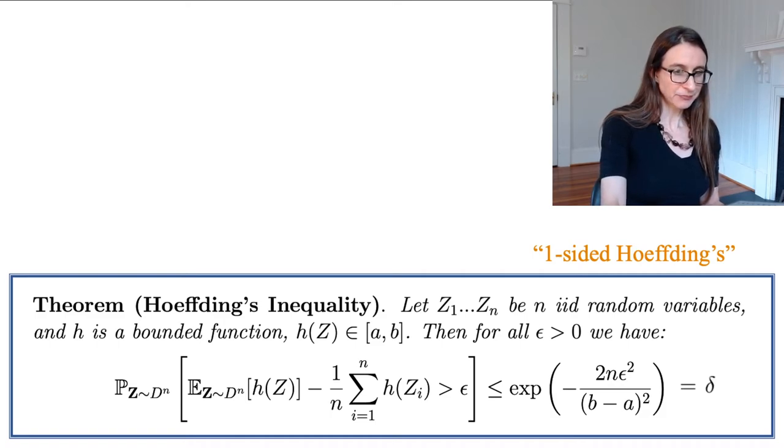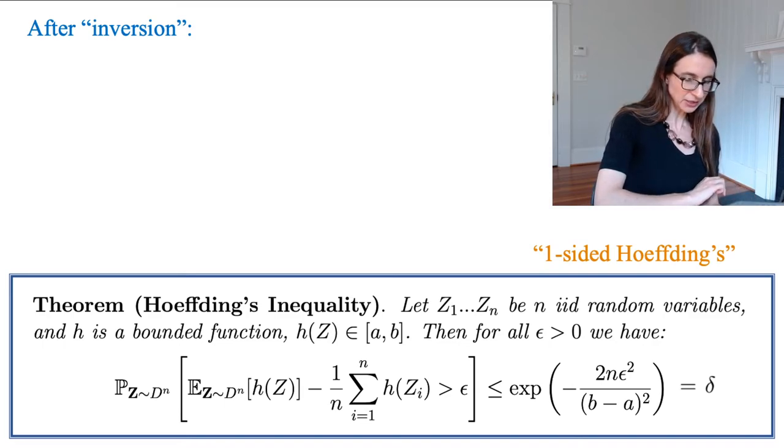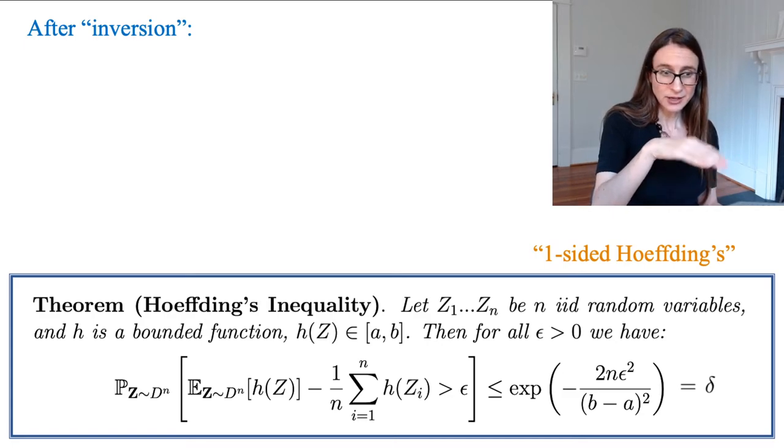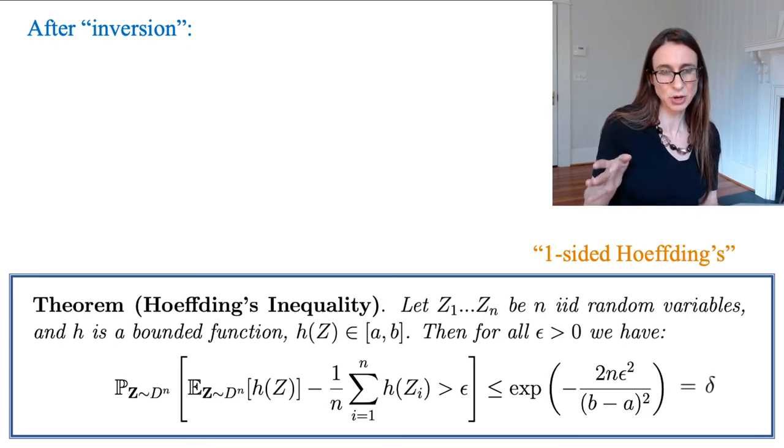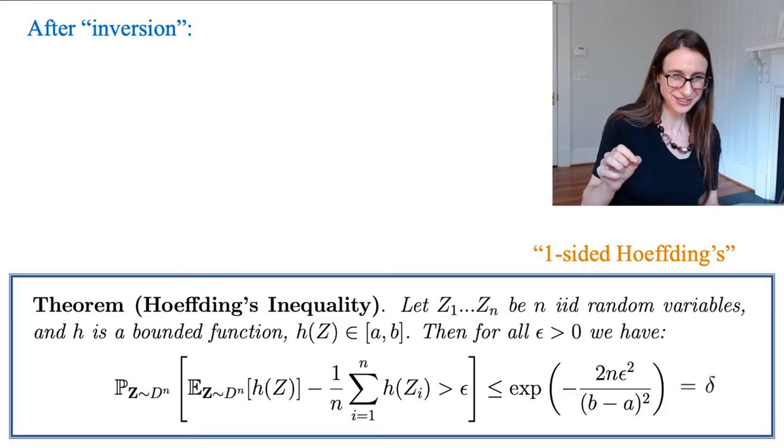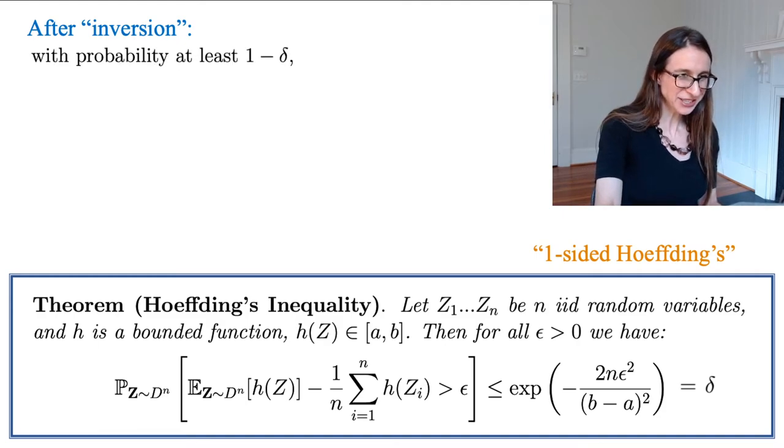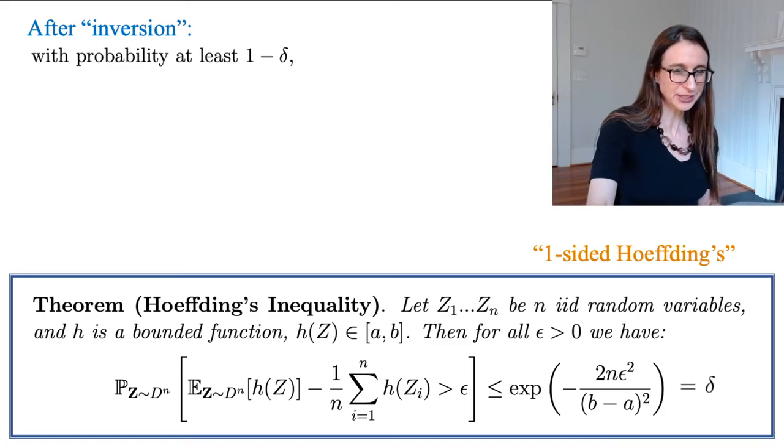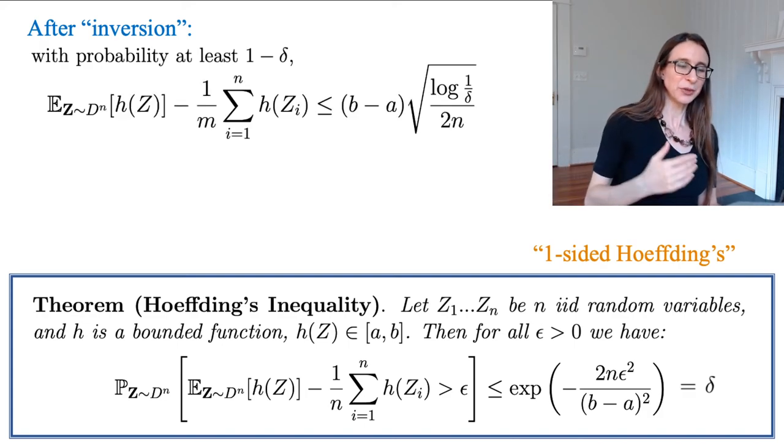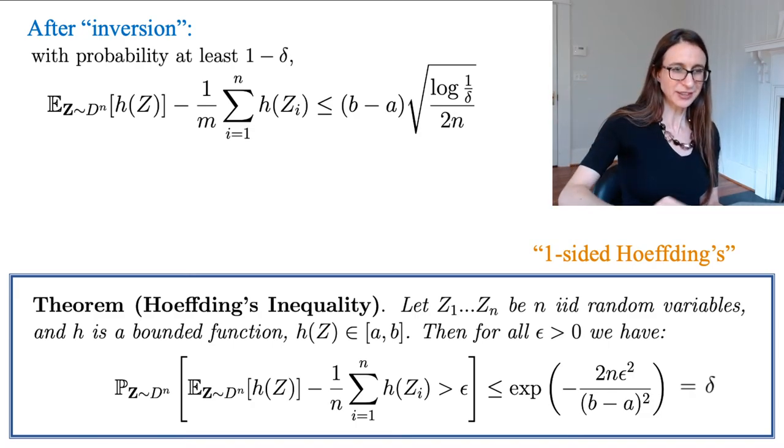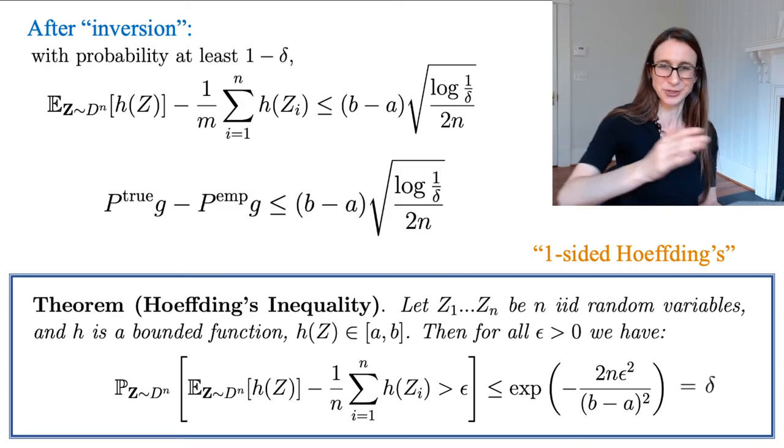And now we're going to call the right-hand side delta, and we're going to use a trick called inversion. Now, if you've never seen inversion before, it's actually a really cool trick. So in the Hoeffding's inequality bound right now, it says the probability that something bad happens is small. But the inverse of that is that the probability that something good happens is large. So here's the inverse. It says with high probability, right, with probability at least 1 minus delta, high probability, something good happens, which is that the true risk minus the empirical risk is less than stuff. Oh, I'm sorry. This is Hoeffding's inequality. I have to actually apply it to the true and empirical risks, which is what I did right there.